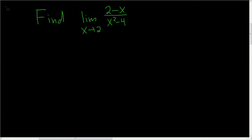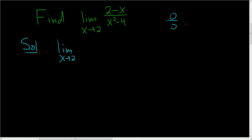We have to find the limit as x approaches 2 of the quantity 2 minus x, all divided by x squared minus 4. The first thing you should try is see if you can just plug in the 2. Well, if you do that, you get 0 over 0, so that's no good. So we have to rewrite this somehow.